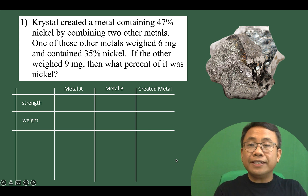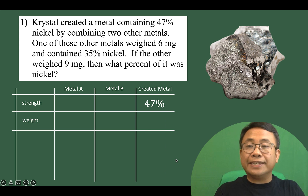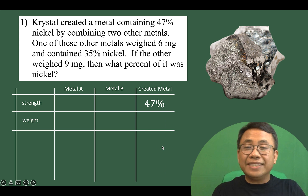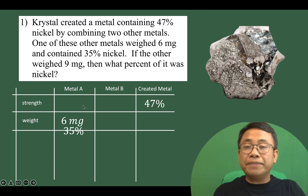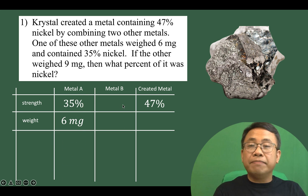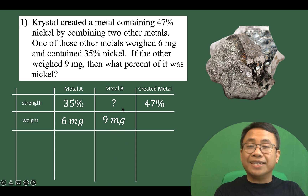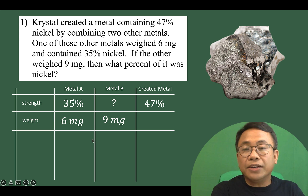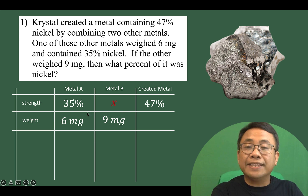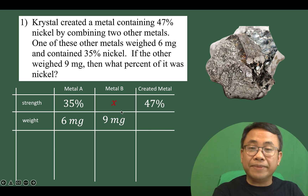Now based on our given, Crystal created a metal containing 47% nickel, and this is achieved by combining 6 milligrams of metal A containing 35% nickel, and metal B that weighed 9 milligrams, but we do not know what percent of it was nickel. So we let X be the variable representing the percent of nickel for metal B.